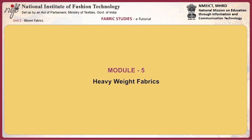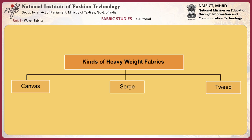Heavy weight fabrics weigh more than 6 ounces per square yard. As the name suggests, these fabrics are strong, heavy and used for durable applications. They are also called suiting weight fabrics and are popular suiting fabrics. These fabrics are widely used as outerwear, workwear, slacks as well as upholstery and industrial fabrics.